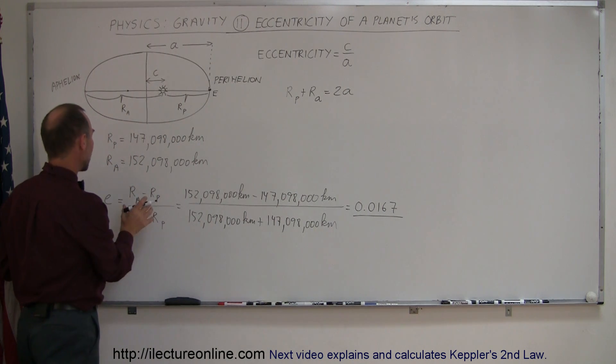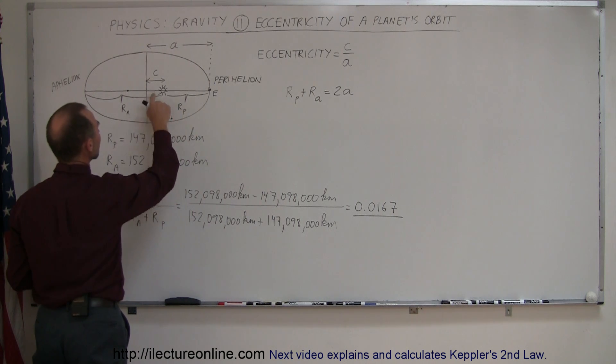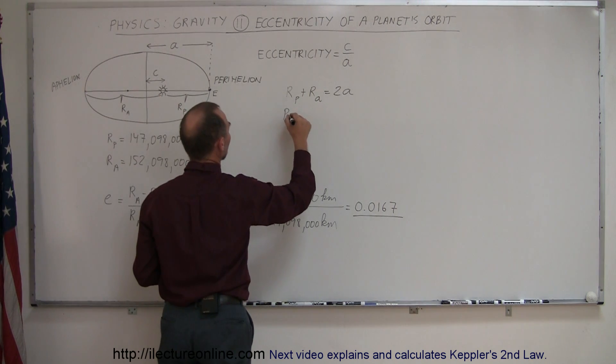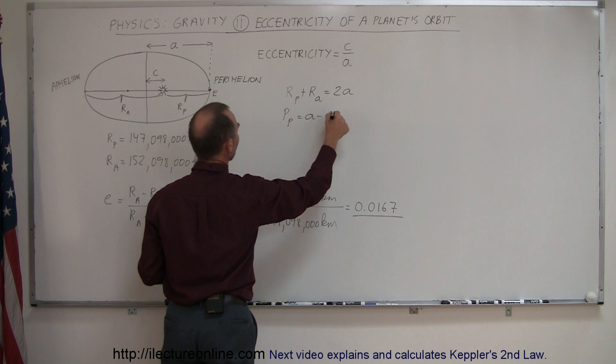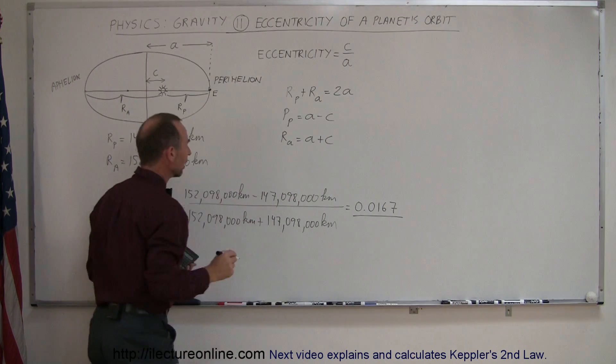And if we now go ahead and look at this, we can see that R sub P is equal to A minus C. So R sub P is equal to A minus C. And we can see that R sub A is equal to A plus C.